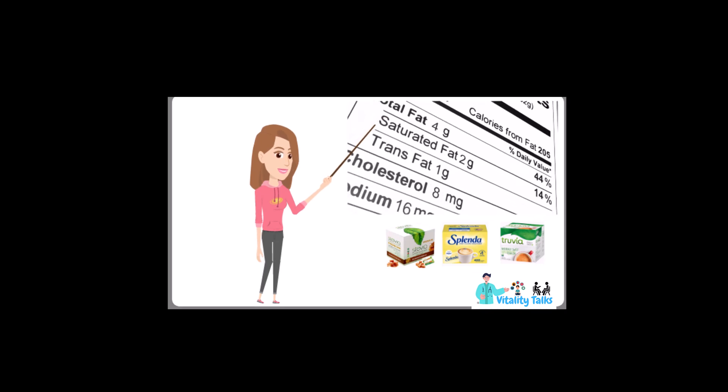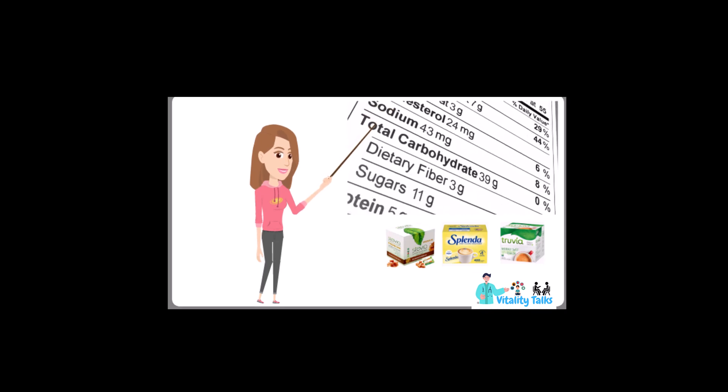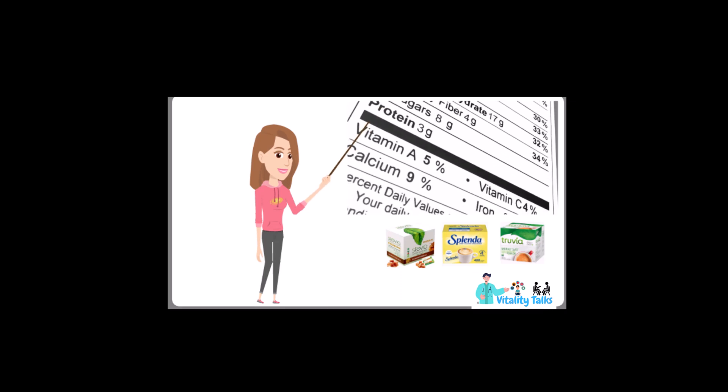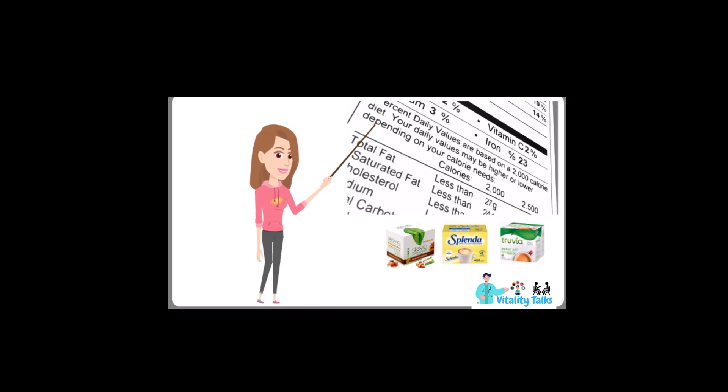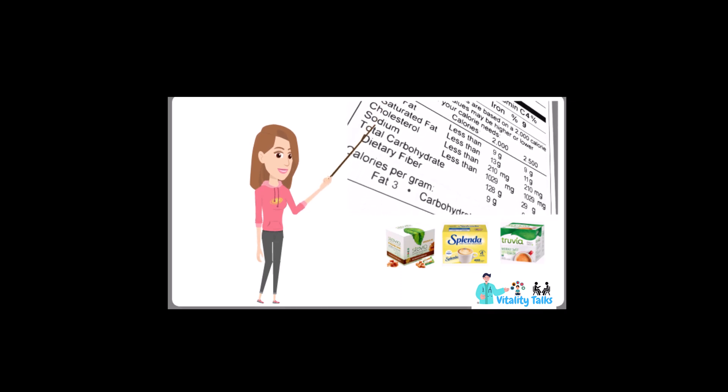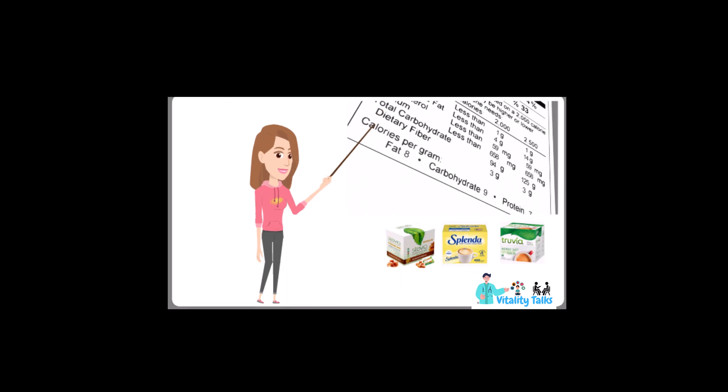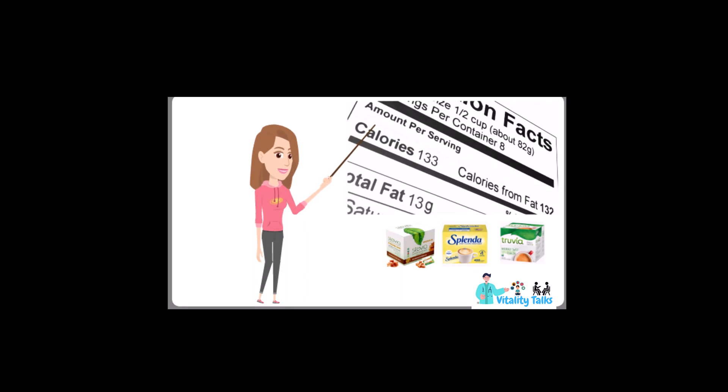In terms of nutritional content, Stevia and Truvia are both zero-calorie sweeteners, while Splenda is a no-calorie sweetener. They are all suitable for people with diabetes as they do not raise blood sugar levels.